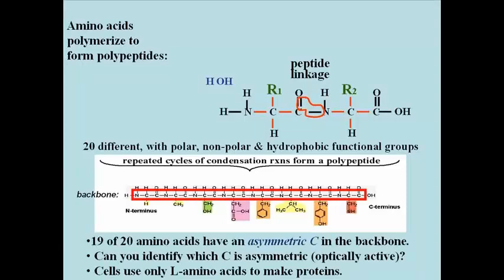Of the 20, 19 amino acids have optically active carbons in the backbone. Can you identify which carbon is optically active in each of the amino acids? These 19 optically active amino acids exist in either L or D forms, standing for levorotary or dextrorotary, and cells use only the L amino acids to make proteins.